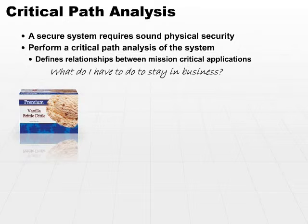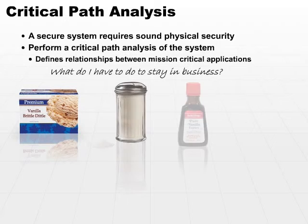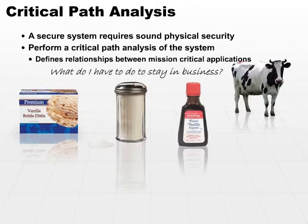What happened before that? We did something else. And at some point, we are going to get all the way back through the process until we end up with — hopefully nothing more than — sugar, milk, and one or two other things we can pronounce. The idea is that we figure out exactly what process it takes to produce our ice cream, and then we decide how each function is interrelated. And that is our critical path.